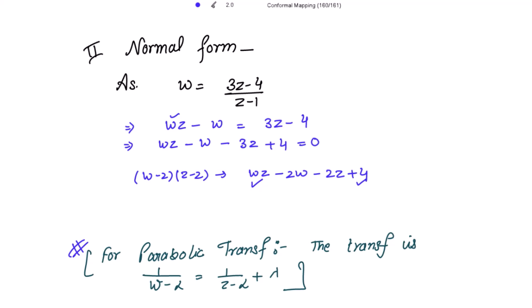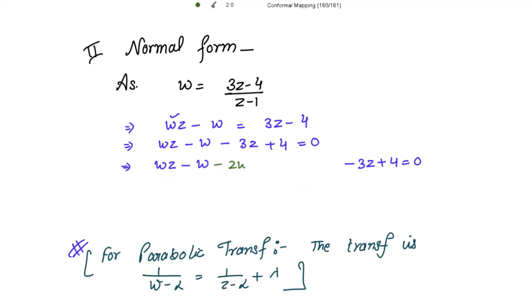The remaining terms needed to complete the product are -2w and -2z. So we add and subtract these two terms. Adding and subtracting gives -2z + 2z. This means (w - 2)(z - 2) accounts for the grouped terms, and the remaining terms give w minus z equal to 0.